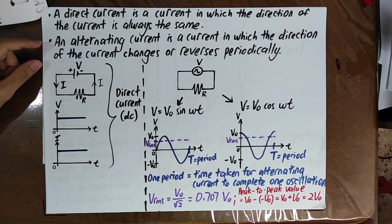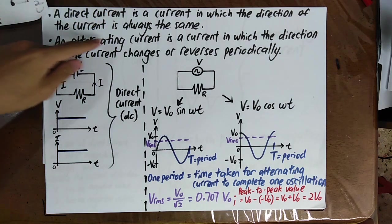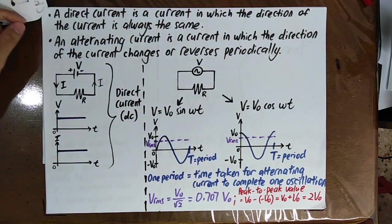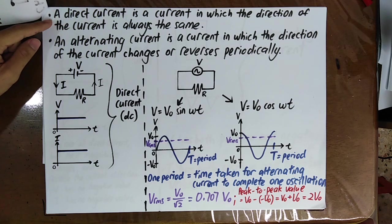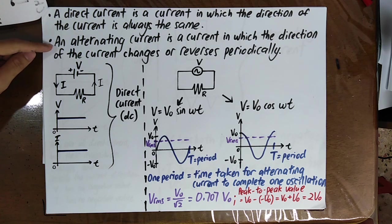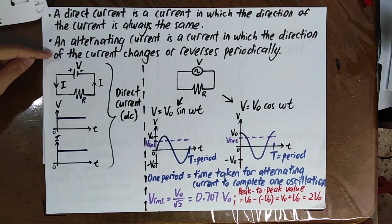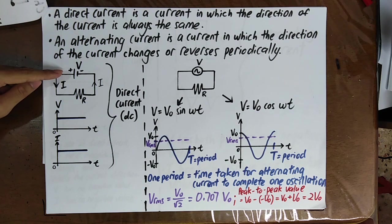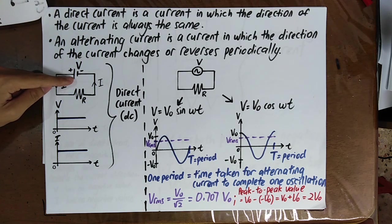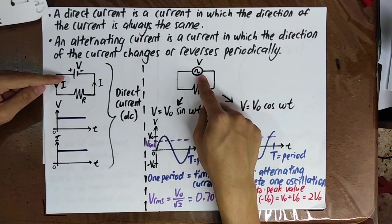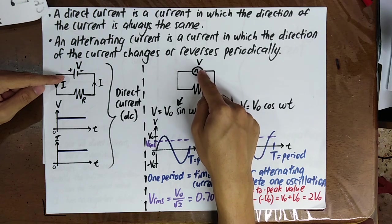In the examination, if you are asked to differentiate between direct current and alternating current, your answer should be: a direct current is a current in which the direction is always the same. An alternating current is a current in which the direction changes or reverses periodically. For direct current you normally use a battery; for alternating current you use this symbol to denote the AC source.